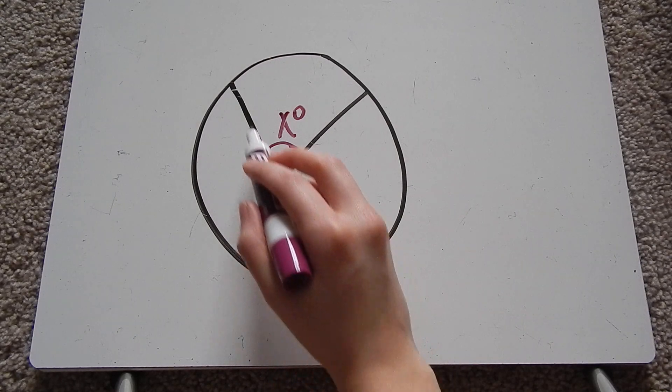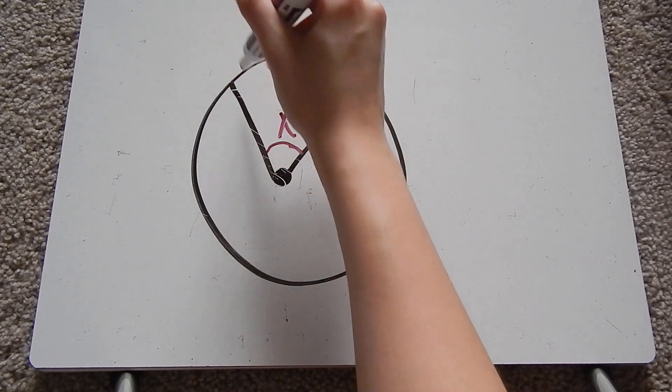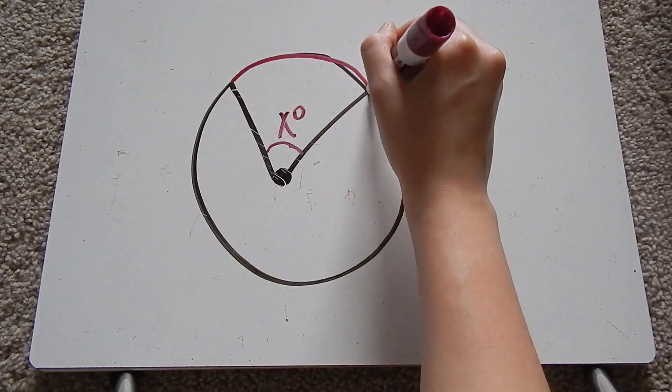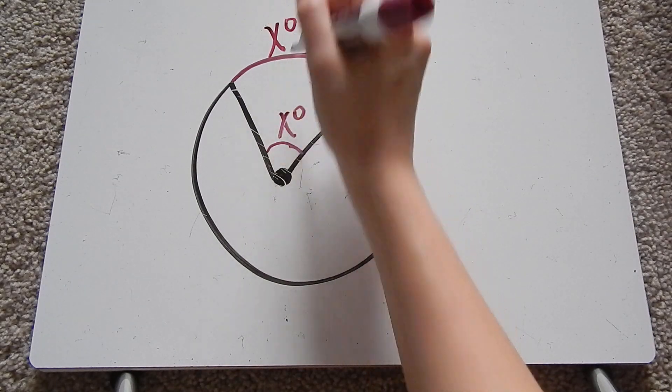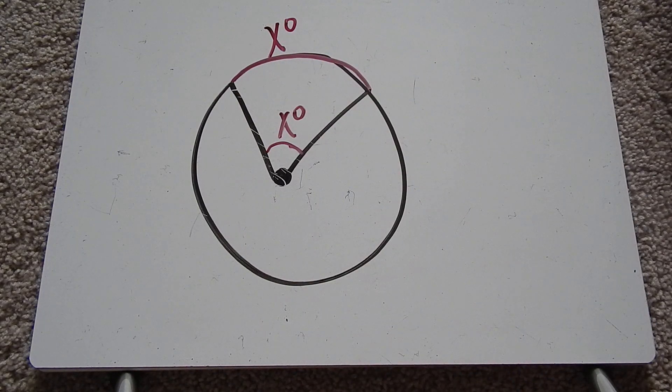Which means this angle here forms this arc, right here. And these are the same angle measures, so this is x degrees as well. So the intercepted arc equals the central angle.